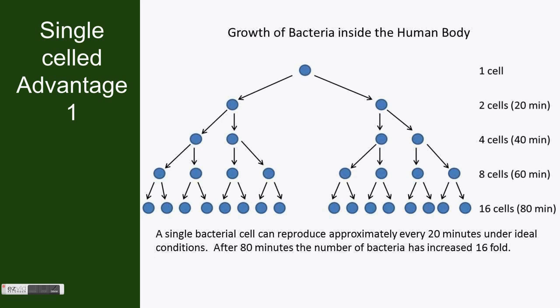As I have said in other videos on this playlist, single-celled organisms reproduce through simple processes such as binary fission or budding. This is what gives single-celled organisms their primary advantage. They can reproduce very fast. The image here shows the reproduction rate of bacteria inside the human body. Bacteria are a very common type of single-celled organism.